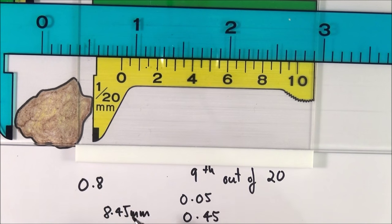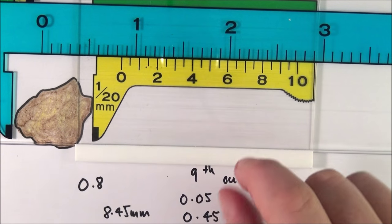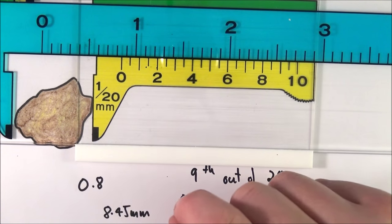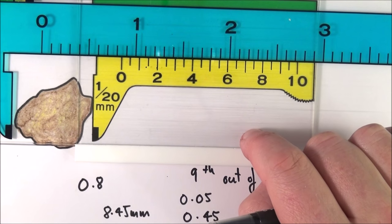This is how we can use the vernier scale to measure very small objects. What I'll do is have a look at a few more objects and you can have a go at commenting below about what the distances actually are.